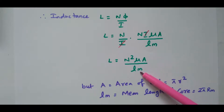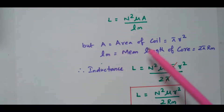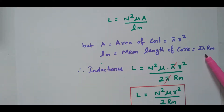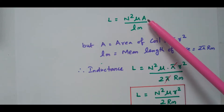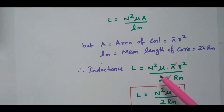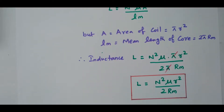Now we substitute the values of area and mean length. The area is πr squared, and the mean length is 2πRm. Substituting, L equals N squared μ times πr squared divided by 2πRm. The π cancels, giving L equal to N squared μ r squared divided by 2Rm. So the inductance of the toroid is N squared μ r squared divided by 2Rm, expressed in terms of the radius of the coil r and the mean radius of the core Rm.